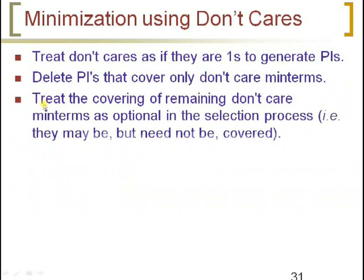Minimization using don't cares: treat don't cares as ones to generate prime implicants, or as zeros when generating prime implicants for max terms. Delete prime implicants that cover only don't care min terms. If you form a group consisting only of don't cares, delete that prime implicant. Treat the covering of remaining don't care min terms as optional in the selection process — any leftover don't cares are ignored.